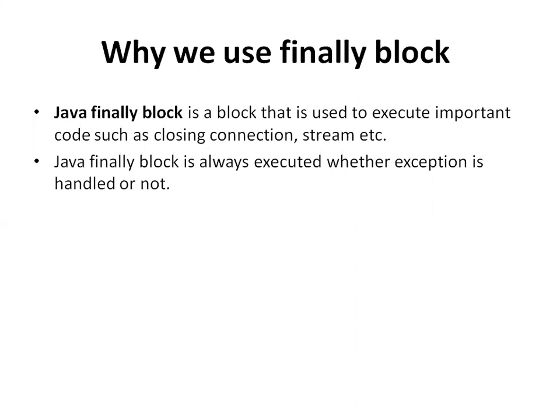Why do we use the finally block, or what is the finally block? The finally block is used to execute important code such as closing a connection, stream, etc. It is always executed whether an exception is handled or not. Many people get confused about whether finally executes under a true or false condition, but the answer is that it will always get executed regardless of whether an exception is handled or not.